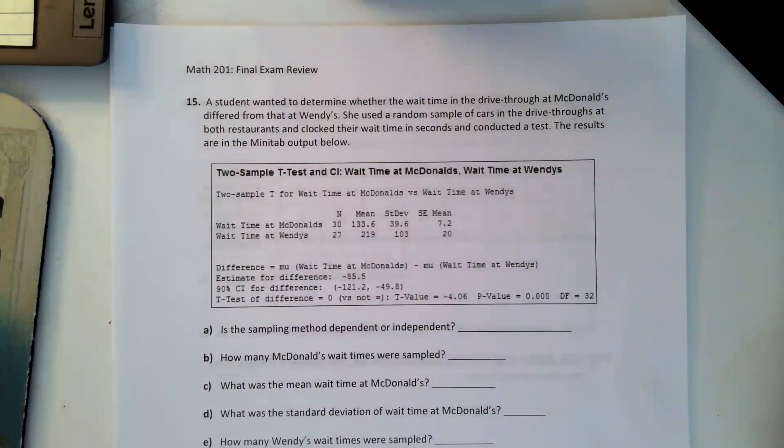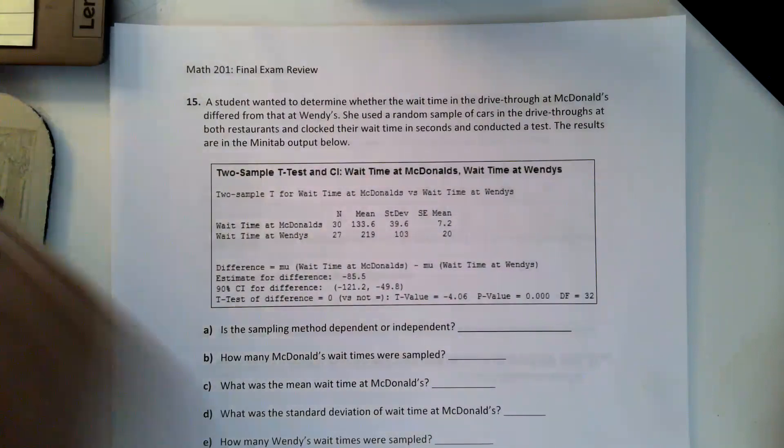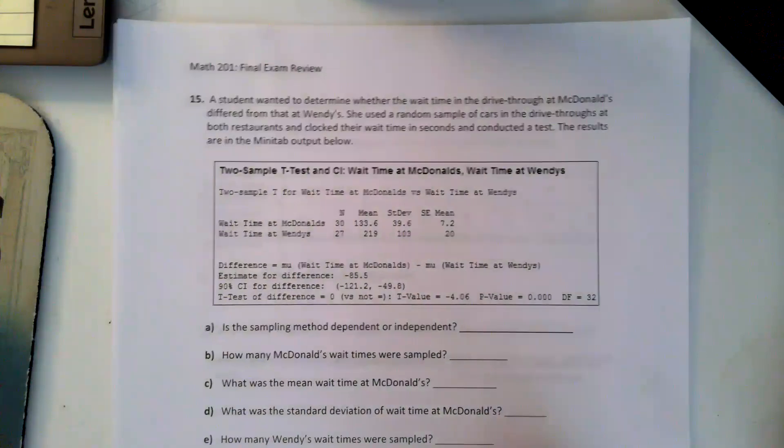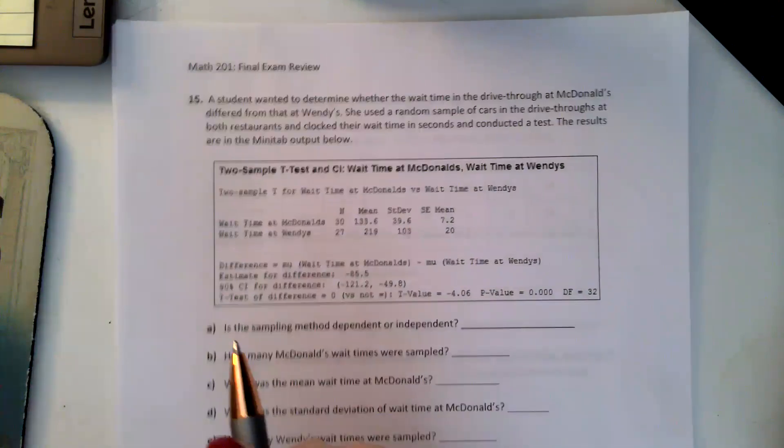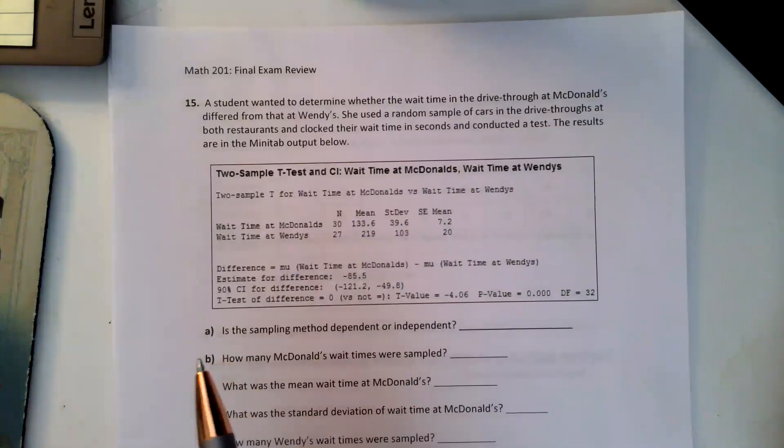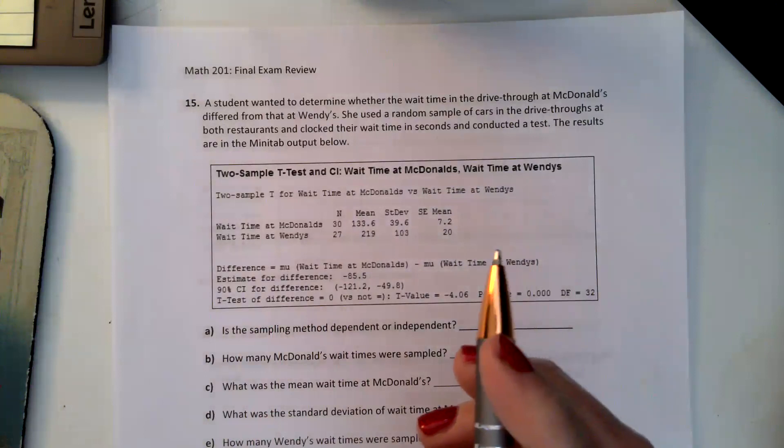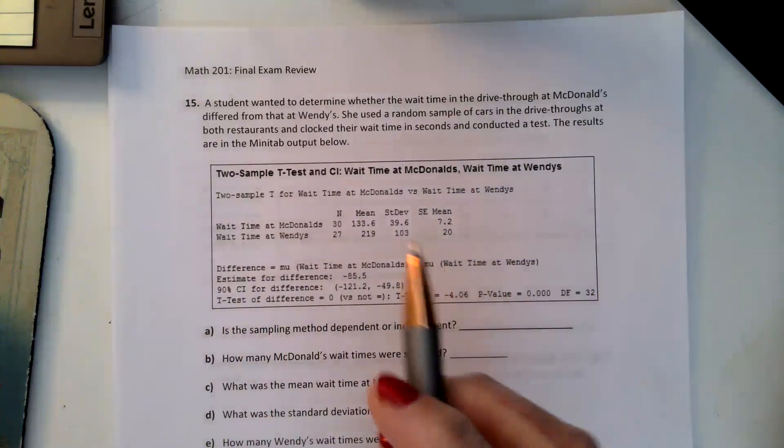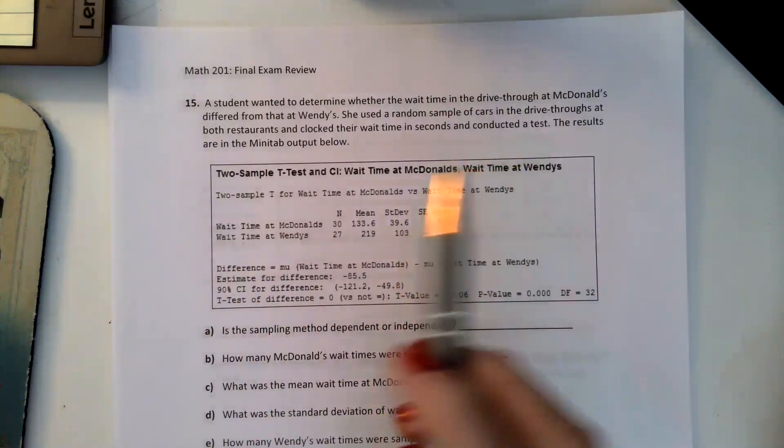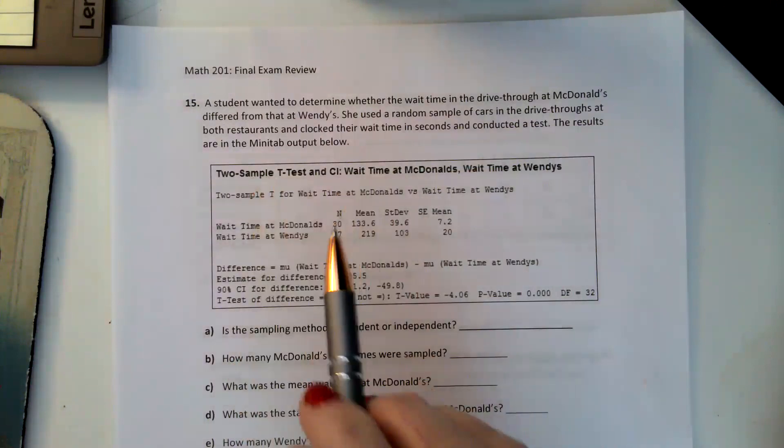Hello, welcome back for the last problem on the video review for Math 201 Statistics for the final exam. Number 15 says a student wanted to determine whether the wait time in the drive-thru at McDonald's differed from that at Wendy's. She used a random sample of cars in the drive-thrus at both restaurants, clocked their wait time in seconds, and conducted a test. The results are in Minitab below.